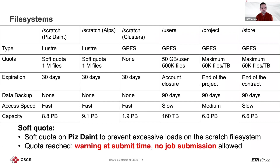Let's look at the file systems available at CSCS, with focus today on Piz Daint. On the top of the table you see the different file systems, starting with the scratch of Piz Daint. The table shows the type of file system, quota if any, expiration/validity of data stored, whether data backup is active, access speed (fast/slow/medium), and capacity available to all users. The scratch of Piz Daint is a Lustre file system with a soft quota that currently monitors the number of files and limits them to one million.